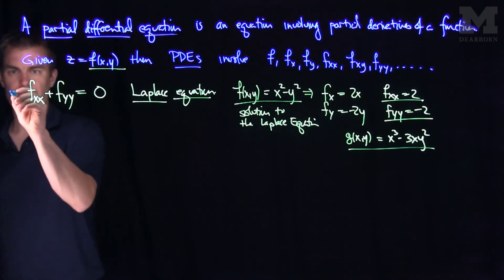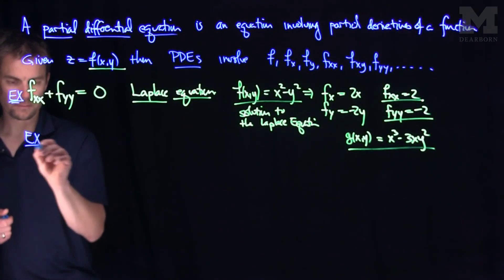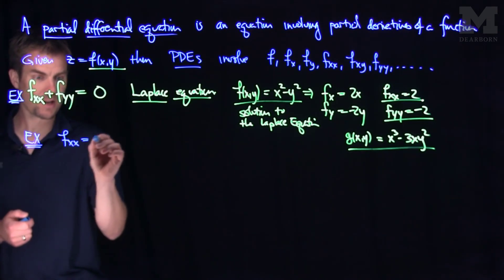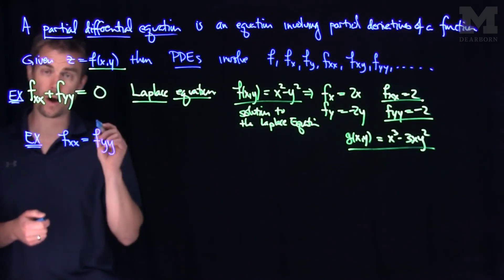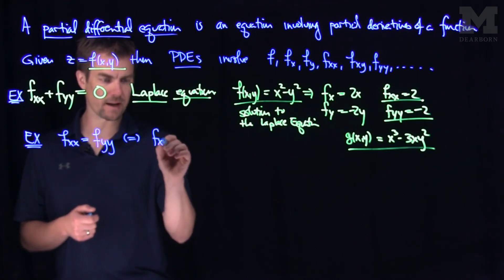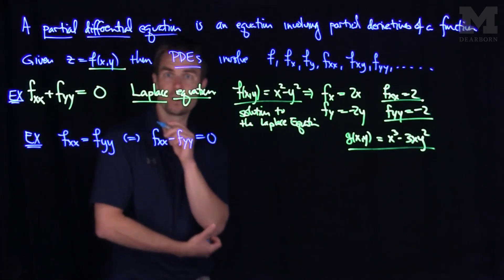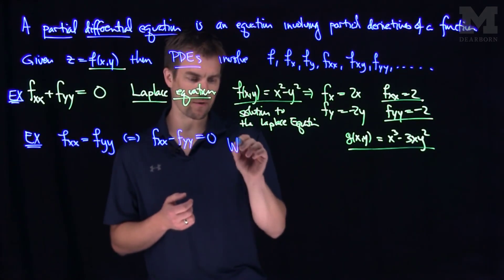Another example of a PDE would be this: f-x-x is equal to f-y-y. It looks like Laplace's equation, but it's the same thing as saying f-x-x minus f-y-y is equal to zero. This is called the wave equation, or the 1-D wave equation.